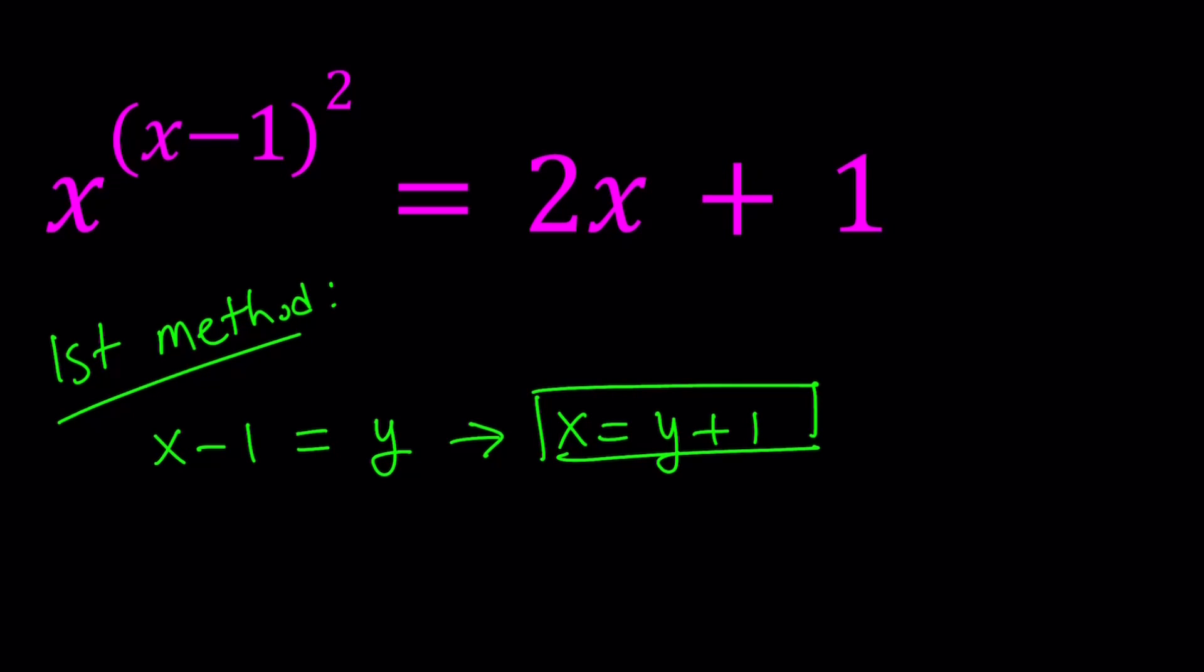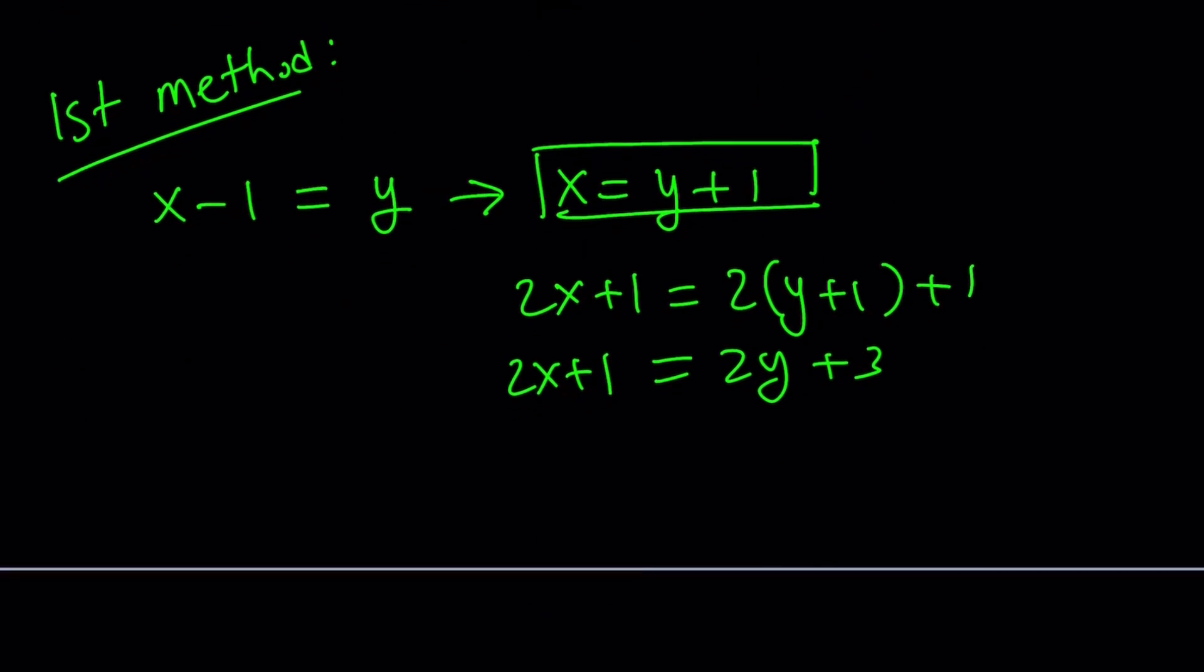And of course this also implies that 2x+1 can be written as 2(y+1)+1, which is 2y+3. So we're going to replace 2x+1 with 2y+3.